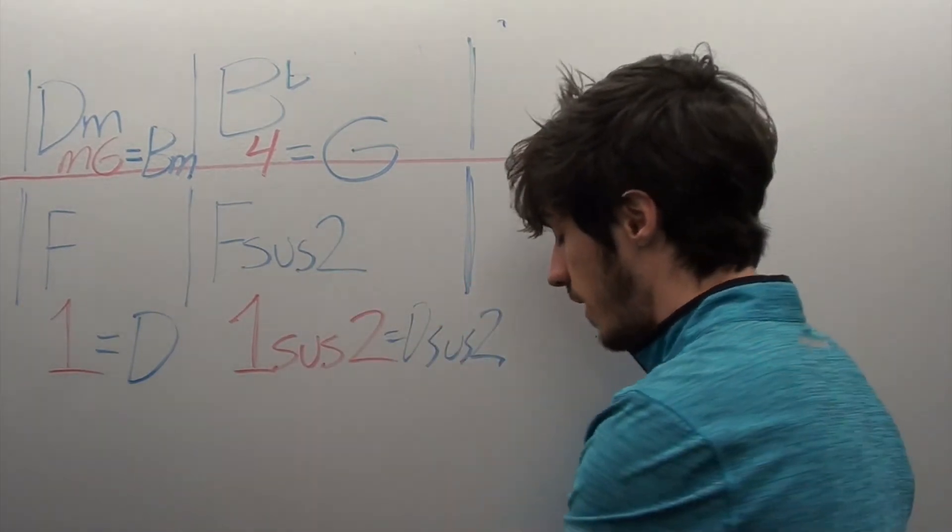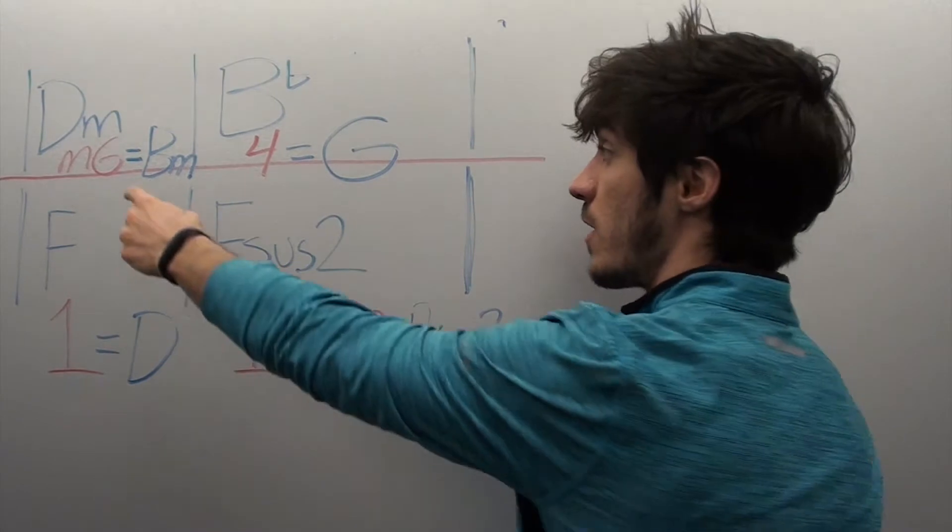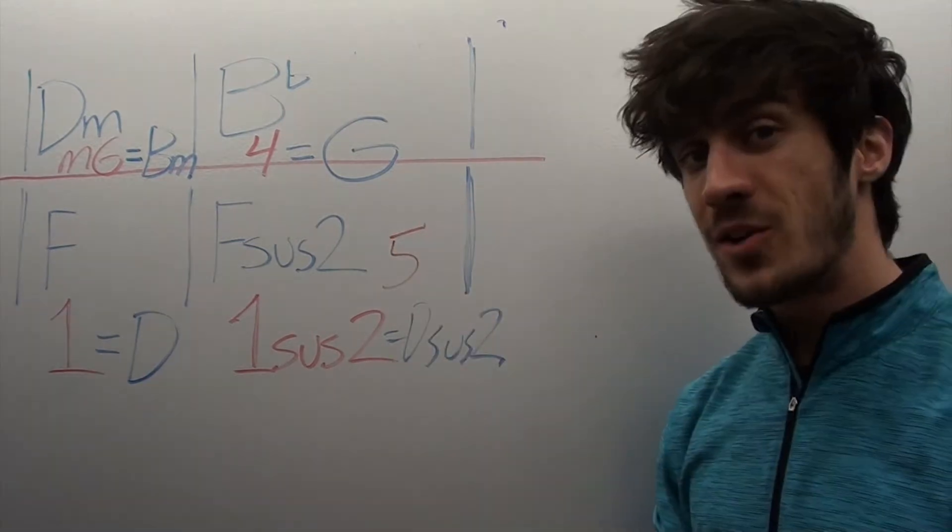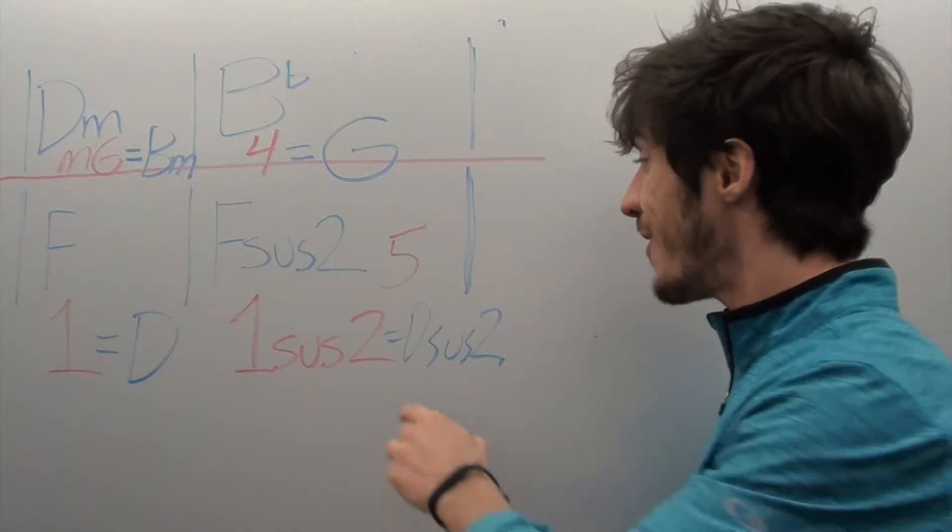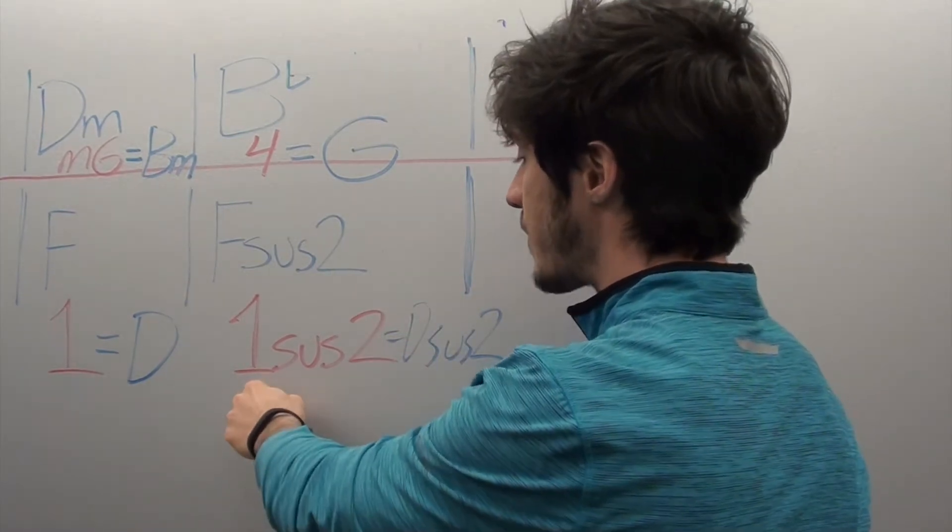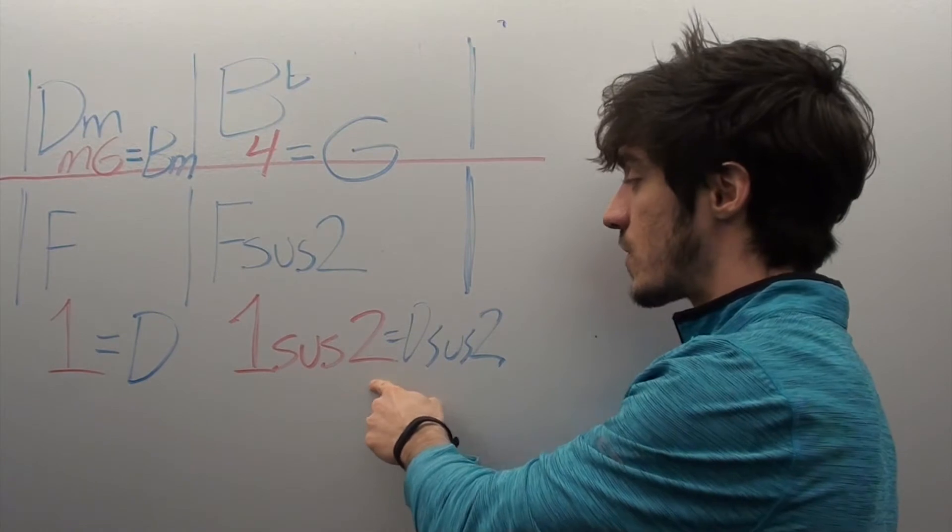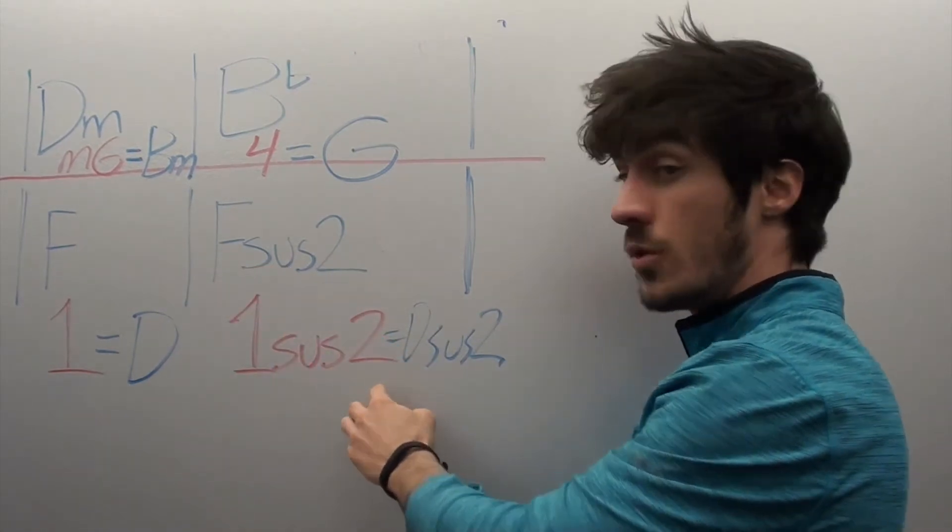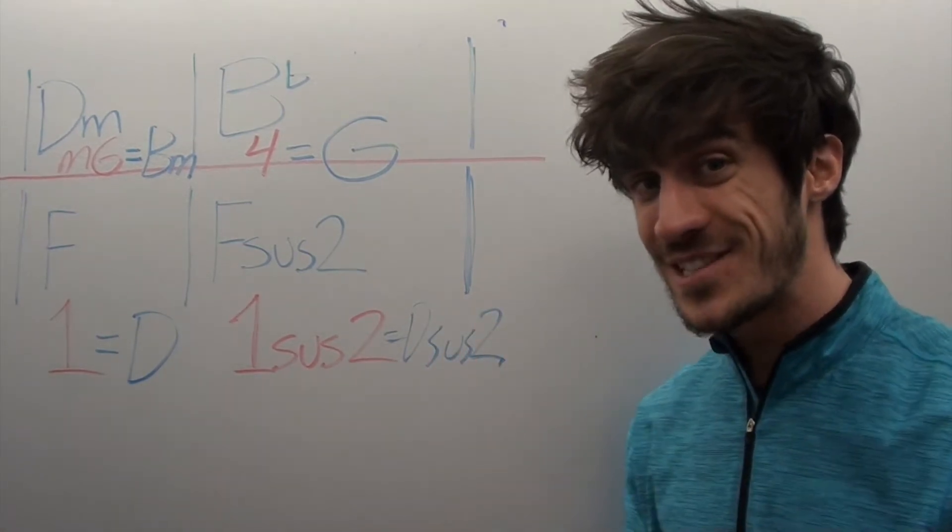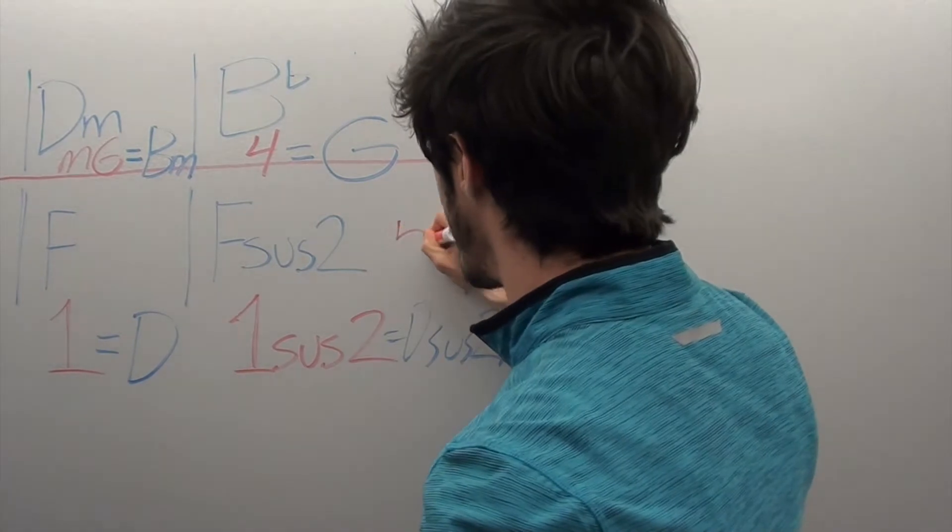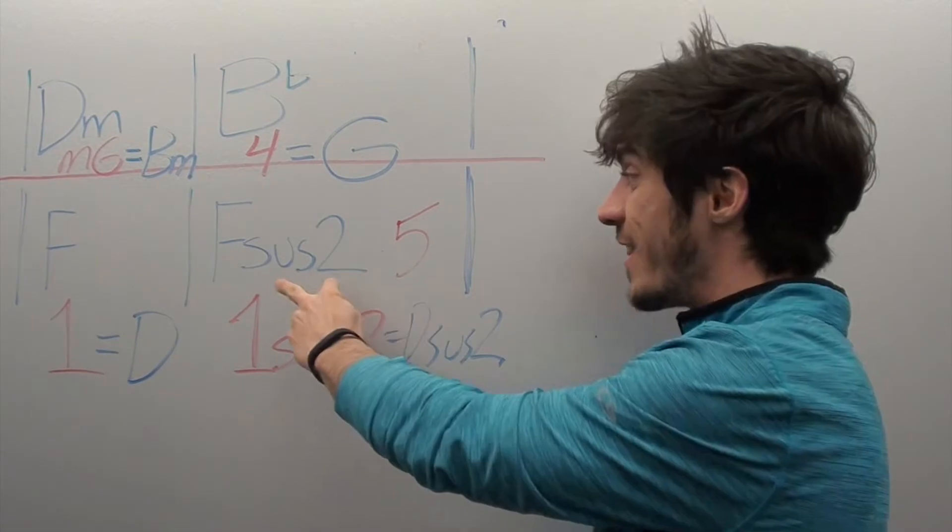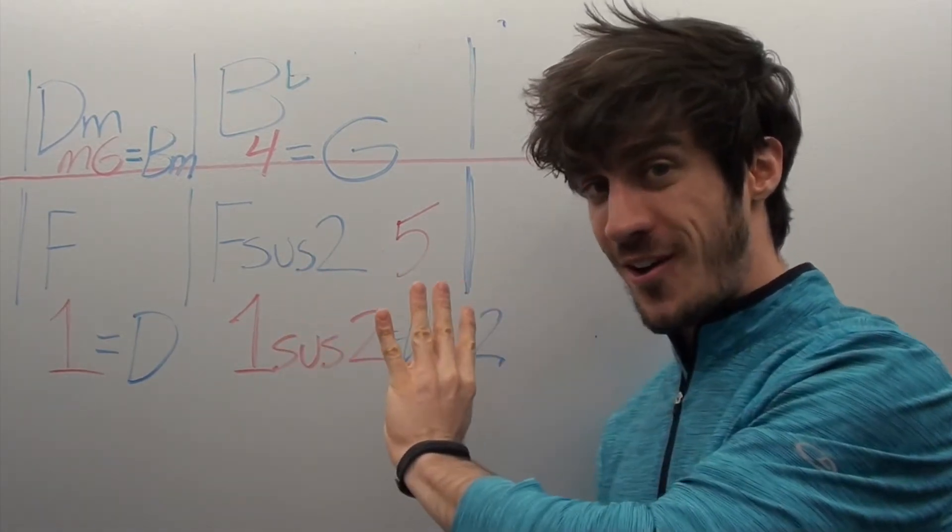most progressions are based around the minor 6, the 4, the 1, and we normally see the 5 right here. But Coldplay knows that. Chris Martin knows that. So he chose to leave the 5 out, or did he? In this case, he puts the 1 in with Sus2. In the case of an F, a Sus2 is an added G within an F chord. Now, a G doesn't normally belong in an F chord, but guess what chord it does belong in? It belongs in the 5. G is part of a C chord, which is the 5 in this scale. They give us part of the 5, but not all of it. So it's different, but similar.